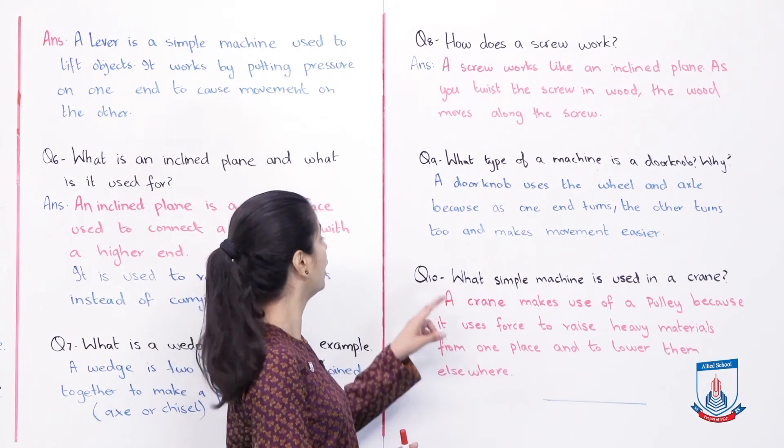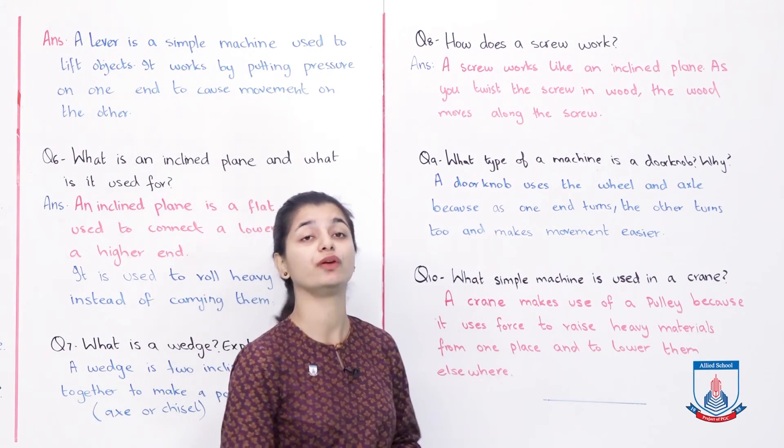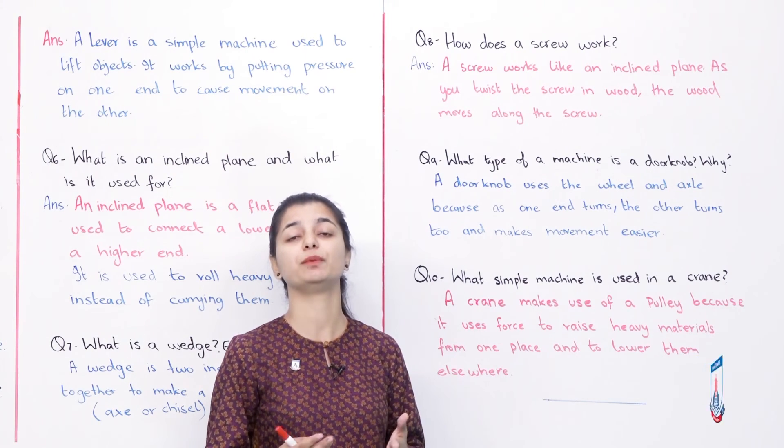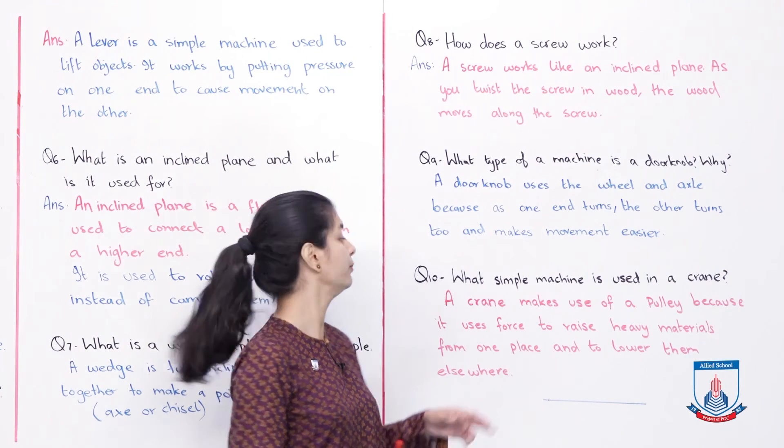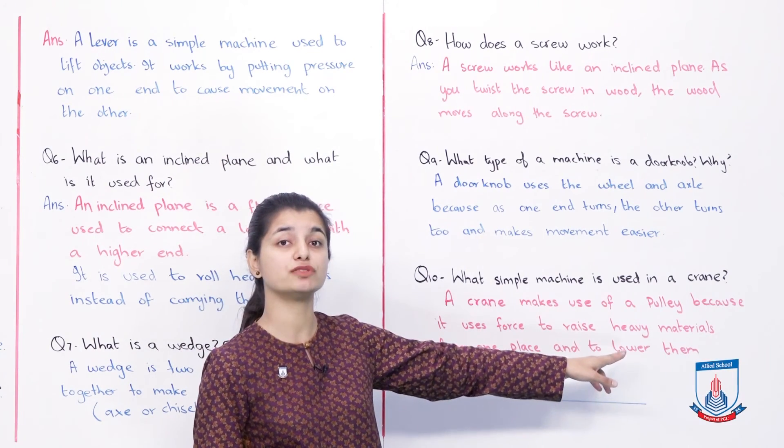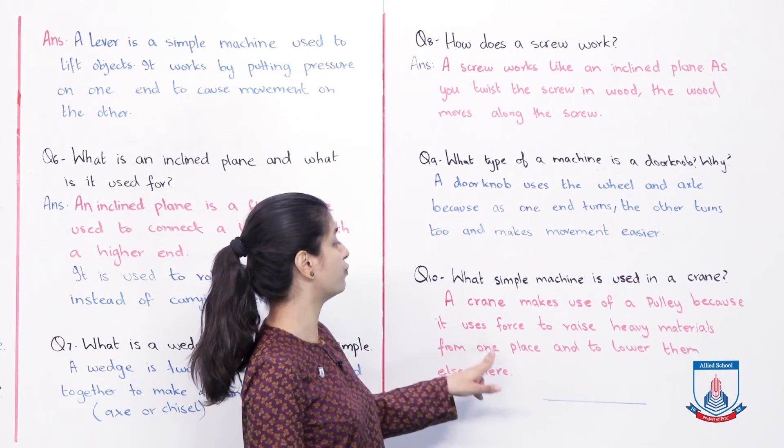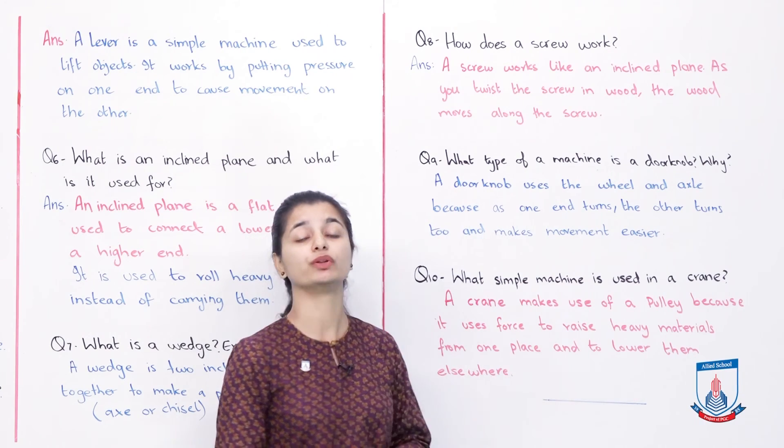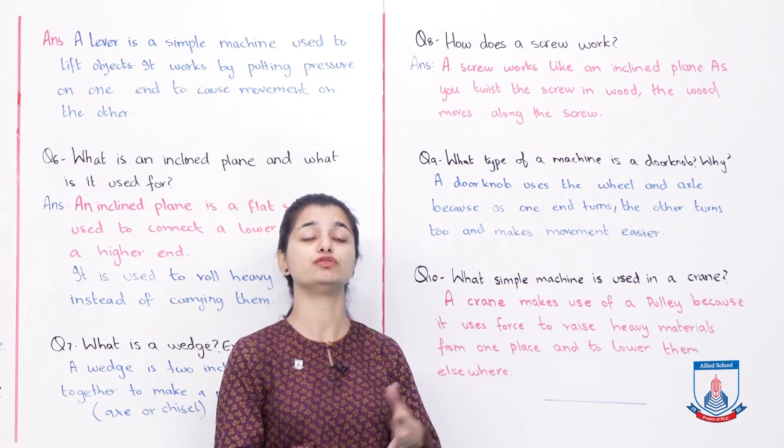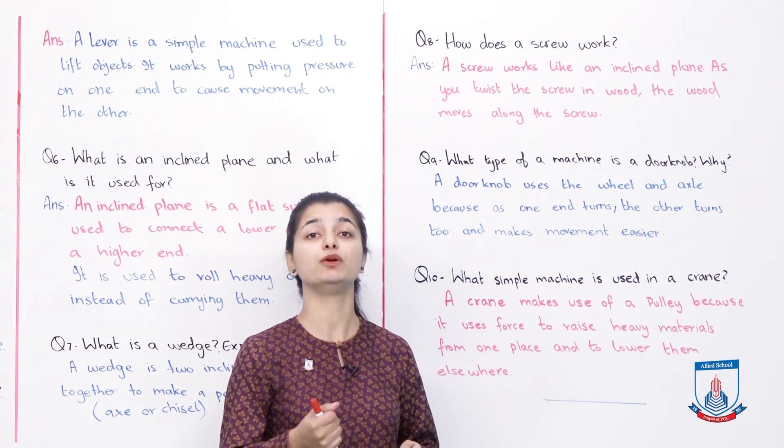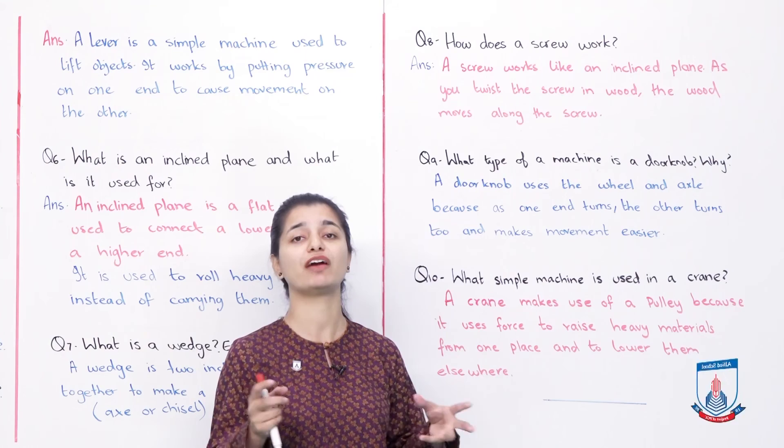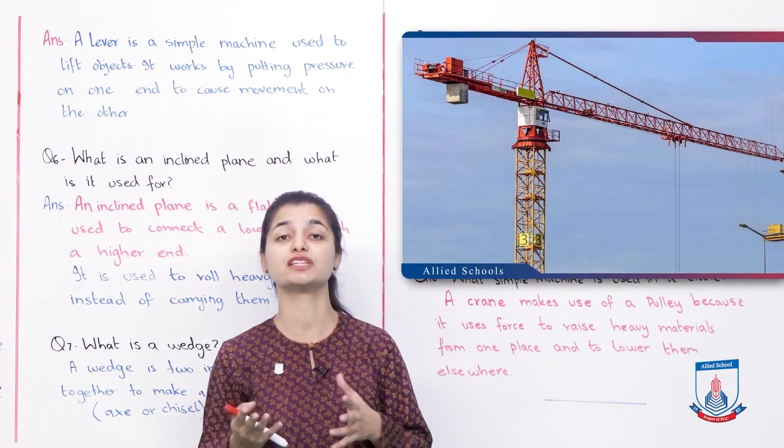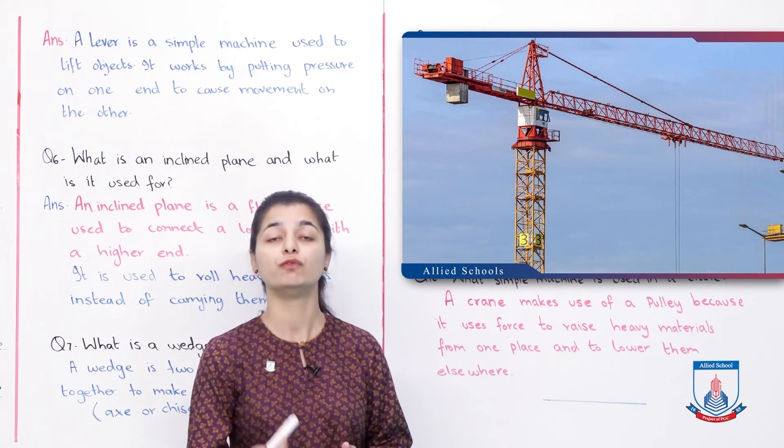Last question: What simple machine is used in a crane? A crane makes use of a pulley. It uses force to raise heavy materials from one place and lower them elsewhere. Cranes use ropes, chains, and hooks to handle and carry heavy objects.